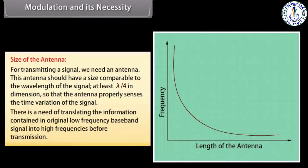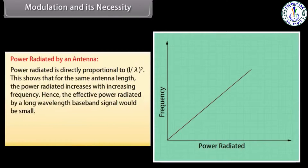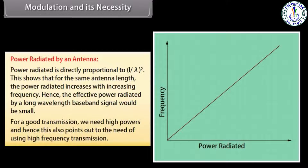Therefore, there is a need to translate the information contained in the original low frequency baseband signal into high frequencies before transmission. Power radiated by an antenna: power radiated is directly proportional to (L/λ)². This shows that for the same antenna length, power radiated increases with increasing frequency. Hence, the effective power radiated by a long wavelength baseband signal would be small. For good transmission, we need high powers, which also points to the need for using high frequency transmission.